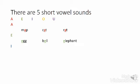For vowel I, the short pronunciation is I, as in fish, wig, and kitten. For vowel O, the short pronunciation is O, as in dog, frog, and block.